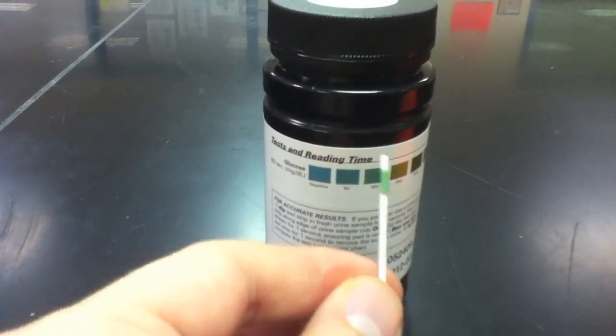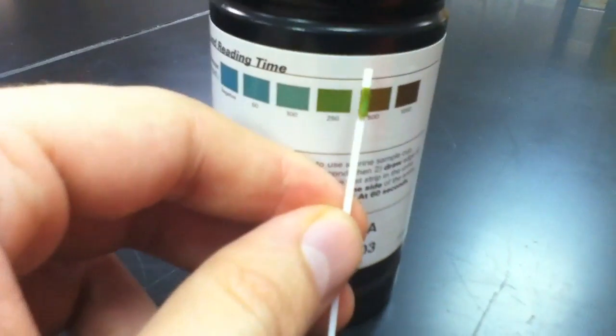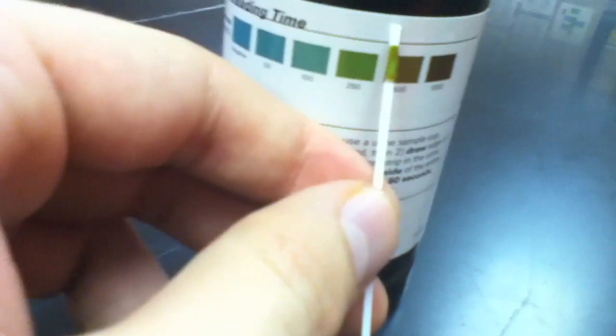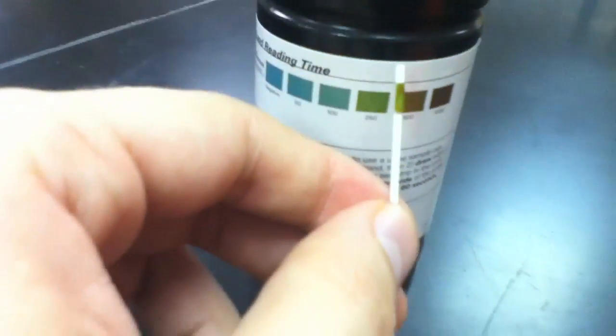Notice the change in color to the glucose test strip throughout the course of the 30 seconds. At the end of the test, one can compare the colorimetric change on the glucose test strip to that of the scale.